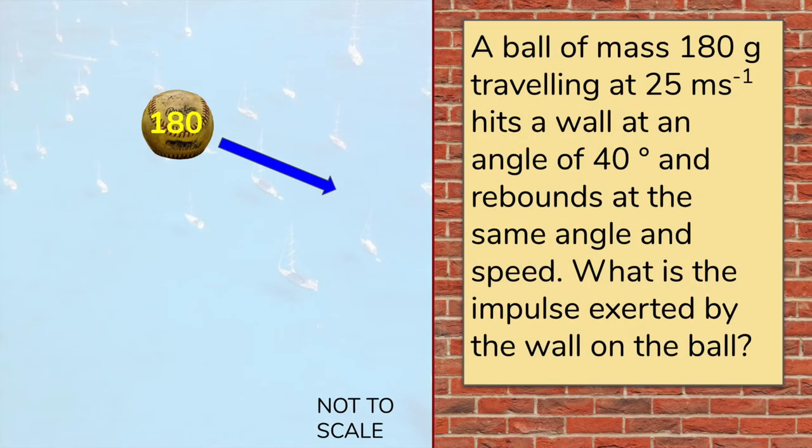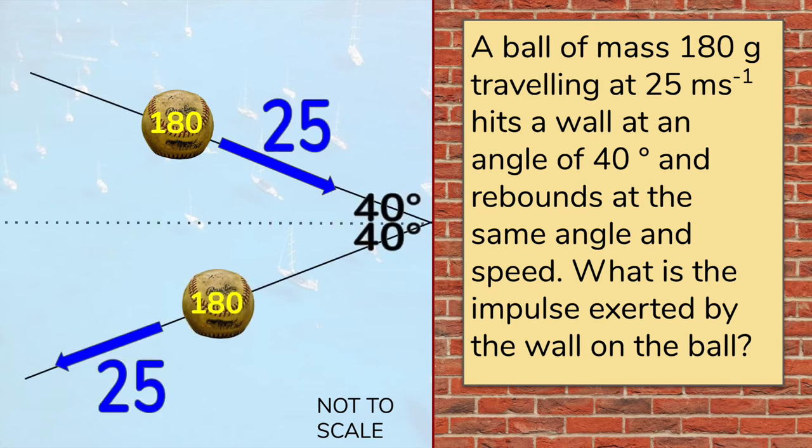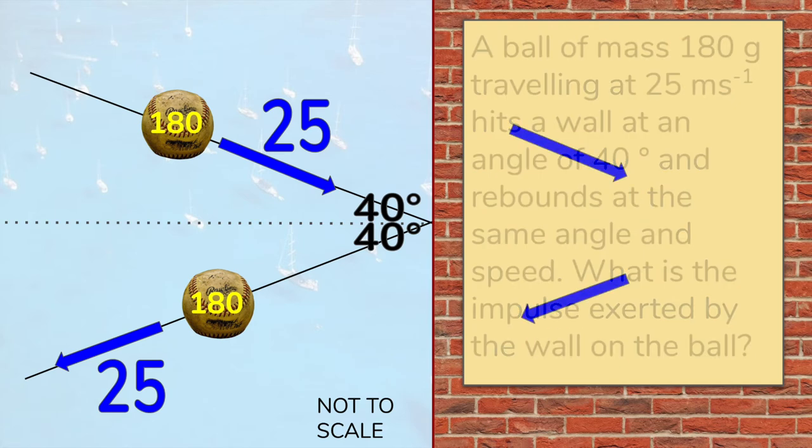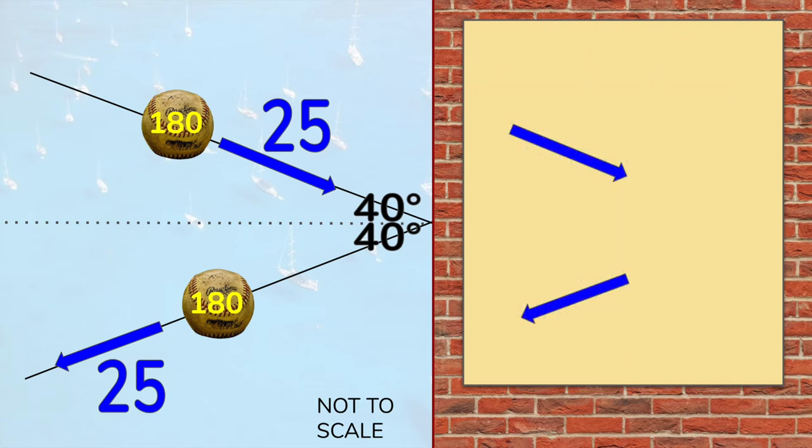Here is a calculation of the impulse which happens to this ball when it bounces off the wall. It's travelling at 25 metres per second and hits the wall at an angle of 40 degrees. There is no loss of kinetic energy and the ball rebounds at the same speed. Here are the figures added to the diagram. The question is about impulse, which means how much did the momentum of the ball change?